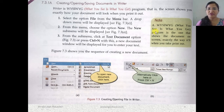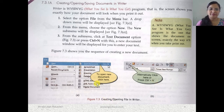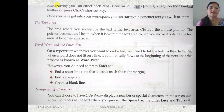A WYSIWYG editor is a program that shows the document on screen with formatting exactly as it will appear when printed. As an alternative, you can click the New Document icon in the standard toolbar or press the shortcut key Ctrl+N to create a document. The same way, you can open an existing document also.